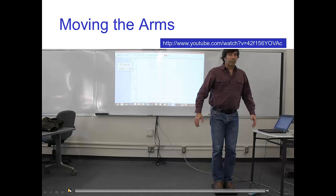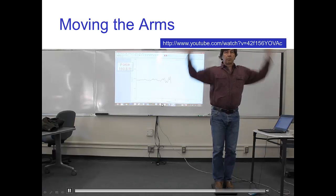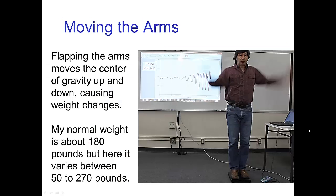Let's look at another example. Here I'm raising and lowering just my center of gravity by flapping my arms. Watch the screen in the back — you see the graph, and you see how my weight is varying up and down as I'm flapping my arms. My normal resting weight would be about 180 pounds, but these weight changes go all the way down to about 50 pounds and up to about 270 pounds, simply by raising or lowering my center of gravity by flapping my arms.